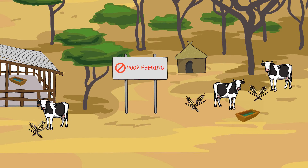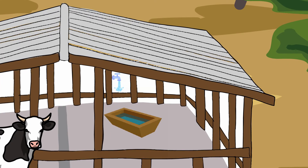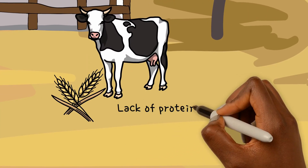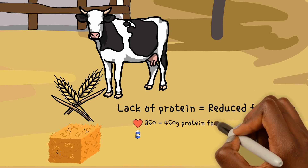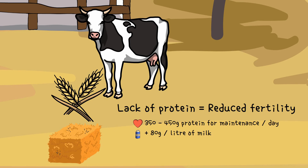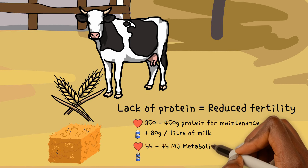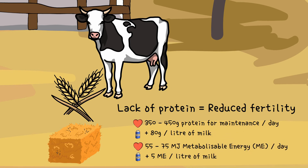Poor feeding: dairy cows should have food and water in front of them all the time. Cows are fermenters of fodder and require plenty of water to get good fermentation in the rumen. Lack of energy or lack of protein in the diet will reduce fertility. Rain-fed pasture, range feeding, and pastoral systems will have times of shortage and low fertility. Fodder conservation to cover seasonal shortages will improve fertility. Cows require between 350 and 450 grams of crude protein for maintenance per day, plus 80 grams of crude protein per litre of milk. They also require 55 to 75 megajoules of metabolizable energy (ME) for maintenance per day, plus 5 ME per litre of milk. For further nutritional advice, see the SNV handbook or the ILRI reference — links are below this video.